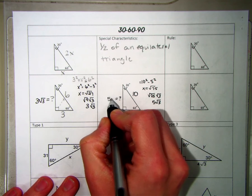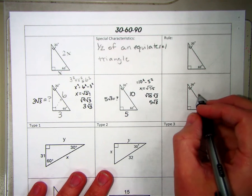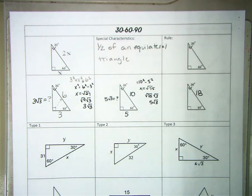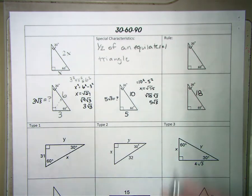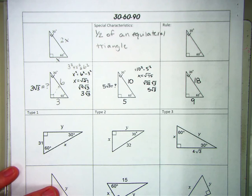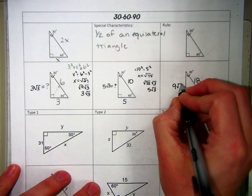Looking at this second example, are you clearer as to what the shortcut is going to be? It was a little deceiving before because the two numbers were the same. But here we can see that whatever our short side is, we take that same number and multiply it times radical 3. If the hypotenuse is 18, the bottom short side is going to be 9 — it's going to be half. And we can confidently say that the medium leg is going to be 9 radical 3, which is 9 times radical 3.